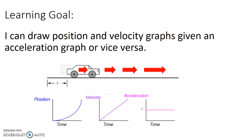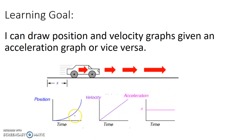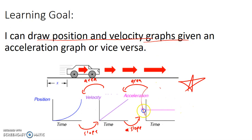The key takeaways for this video: going from position to velocity, take the slope; going from velocity to acceleration, take the slope; going from acceleration to velocity, take the area; going from velocity to position, take the area. That's the big key of the video, so hopefully now you can draw position and velocity time graphs given an acceleration graph, or vice versa.